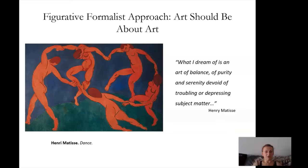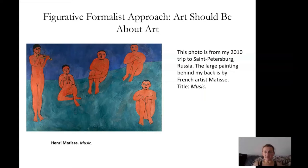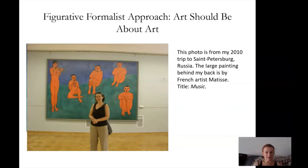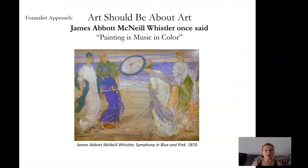This is one of his works called Dance. As you can see, this is a more abstracted human figure, and the painting is actually reflecting on another form of art — dance. It's a huge painting. There is another painting like it called Music. I actually posted a photo of me so you could see the proportions — this painting is behind me. This is from 2010 when I visited St. Petersburg, Russia, at the Hermitage, where these two huge paintings are in the collection. One painting is about dance, one about music — both a form of art reflecting on another form of art. It's a formalist approach.